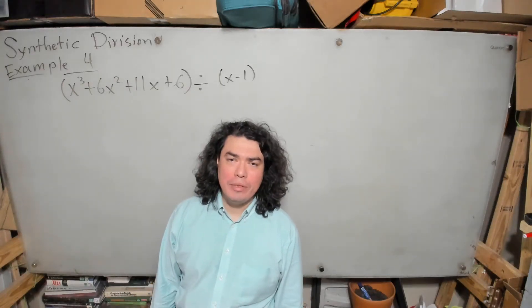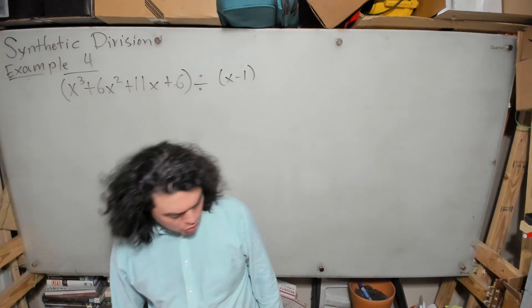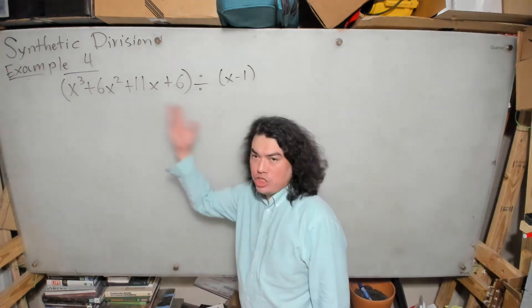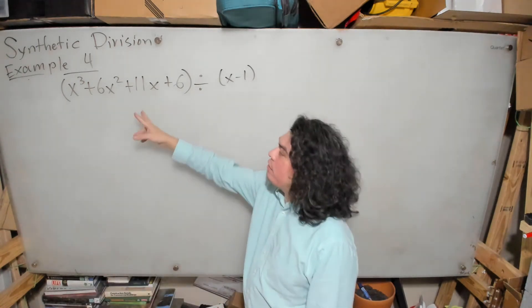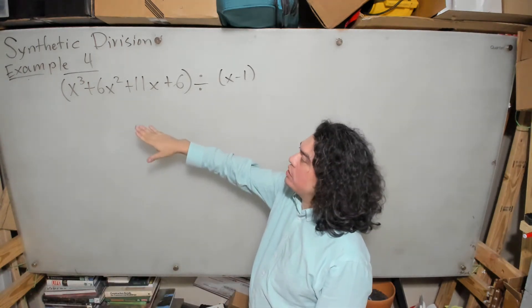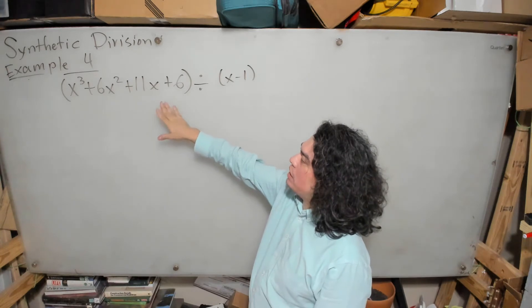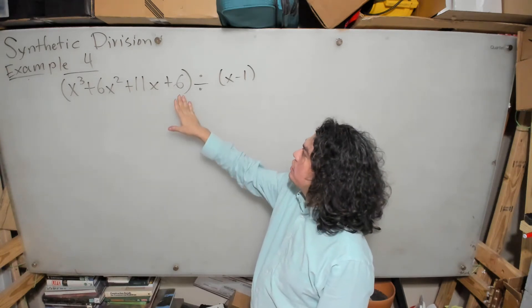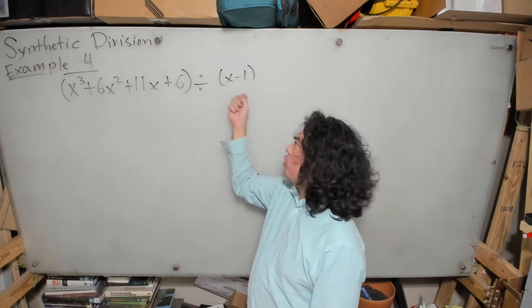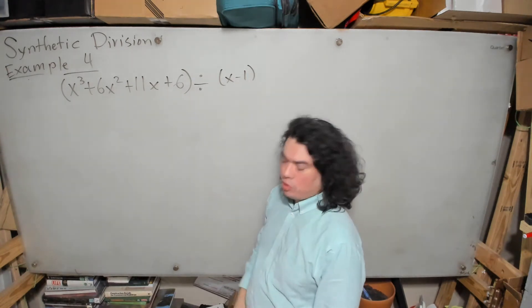Hello ladies and gentlemen. We're going to be performing a division — we're going to divide the polynomial x cubed plus 6x squared plus 11x plus 6 by the linear polynomial x minus 1.